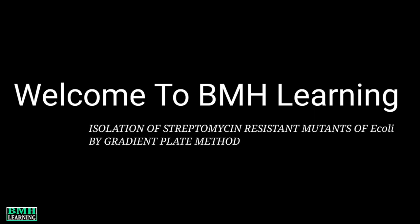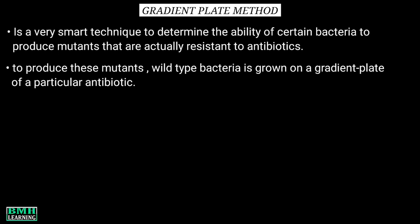Welcome to BMH Learning. In this video we are going to discuss the isolation of streptomycin-resistant mutants of E. coli by the gradient plate method. The gradient plate method is a very smart technique to determine the ability of certain bacteria to produce mutants that are resistant to antibiotics. To produce these mutants, we grow the wild-type bacteria on a gradient plate of a particular antibiotic — in this case, streptomycin.